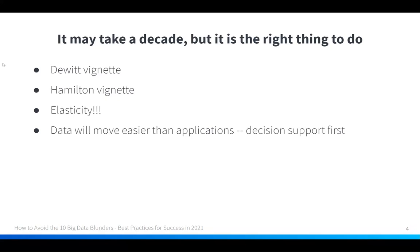Moreover, if you move to the cloud, the big deal is elasticity. You use one node for end-of-month processing, 20 nodes the day before when you're getting ready, and three nodes on the first day of the next month. You can scale your resources with your load. Decision support will be the first to move, and if you're not well along with moving all of your decision support to the cloud, I think you're making a big mistake.